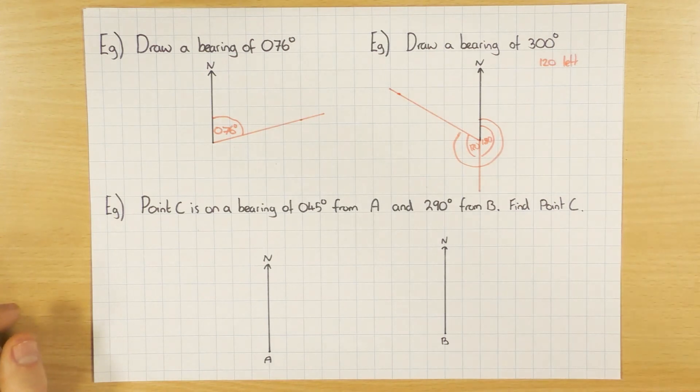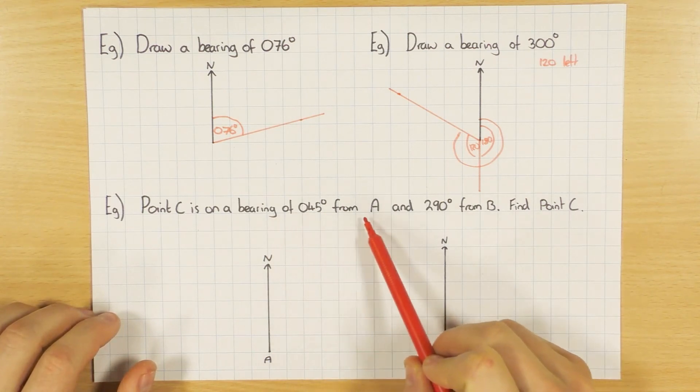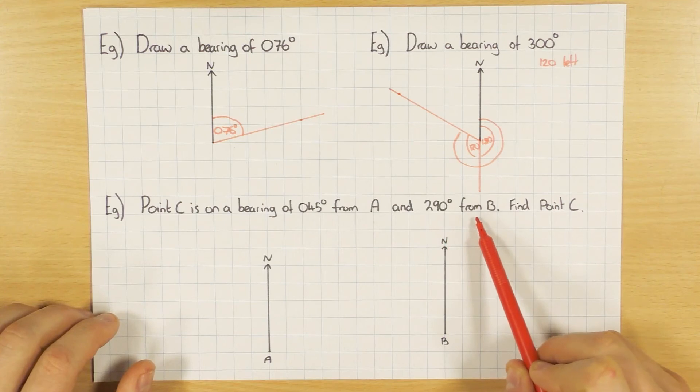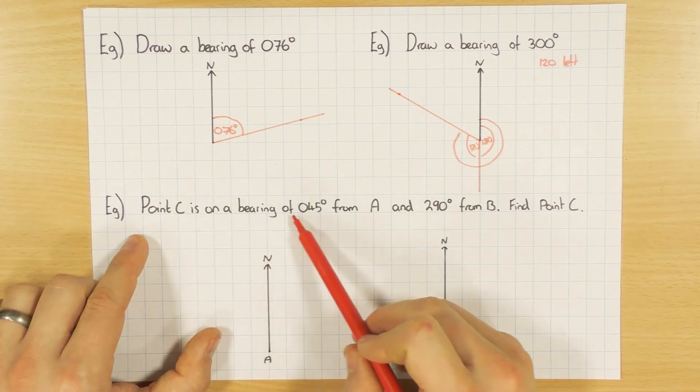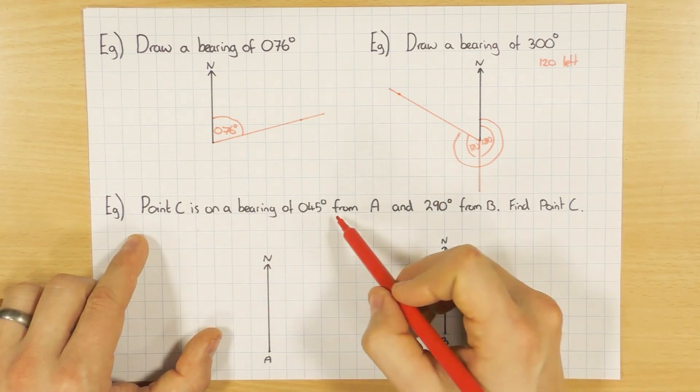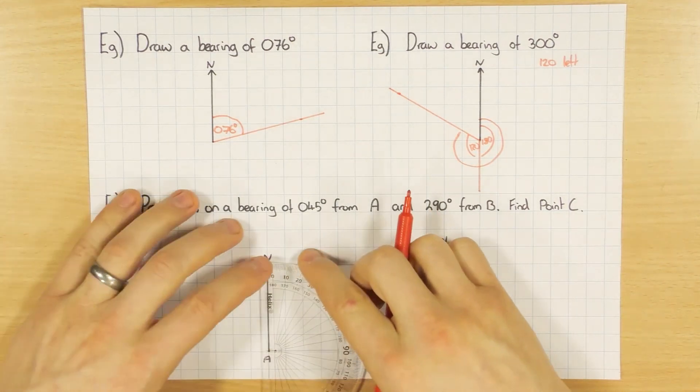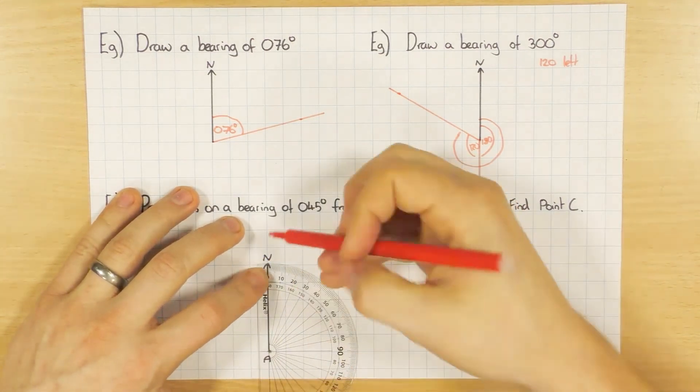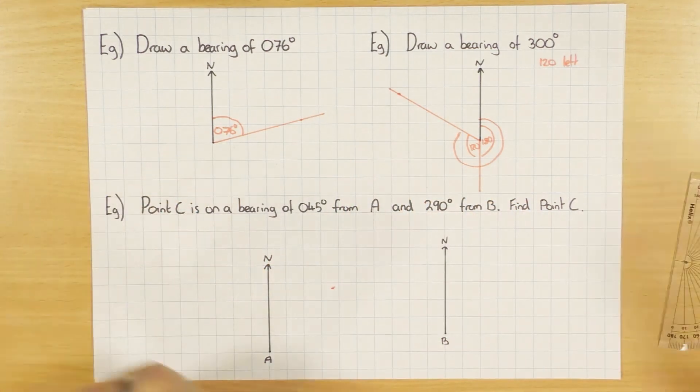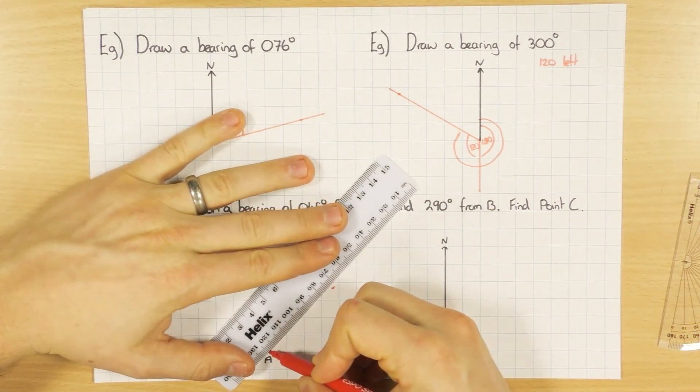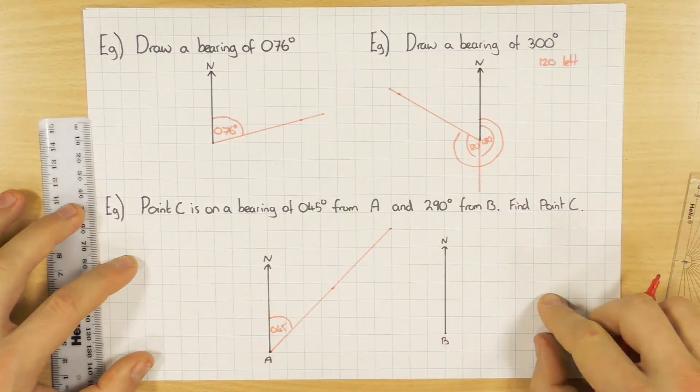Now what's more common in exams is something like this. Point C is on a bearing of 045 degrees from A, and 290 degrees from B. Find point C. So let's break this up into the first bit. Point C is on a bearing of 045 degrees from A. There's this from business again. So from A, I need to measure out 45 degrees. So just like we did with the examples above, we start at north, zero. And I measure 45. And I put a little mark there for 45. And just draw a nice big long line, like so. That is 045.